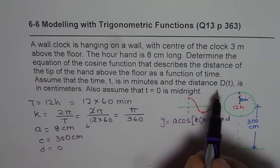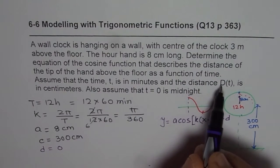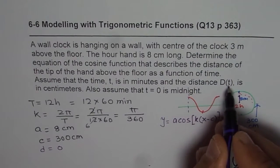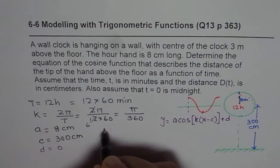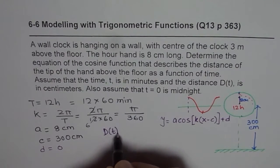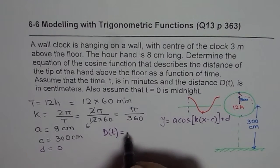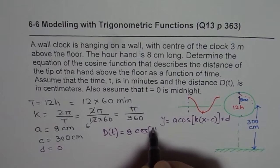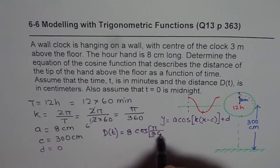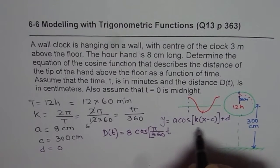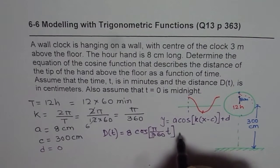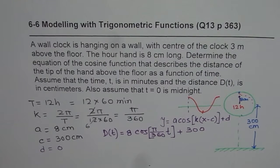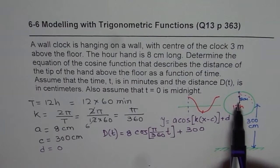and we want d(t) as the distance in centimeters. So y is a function of time. So d(t). So we will use d(t), the distance is equals to 8 cos of, k is π over 360, t is a function, c is 0, so 0, plus 300. So that gives you the function for our hand.